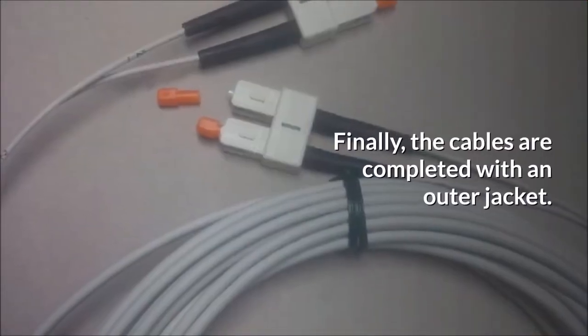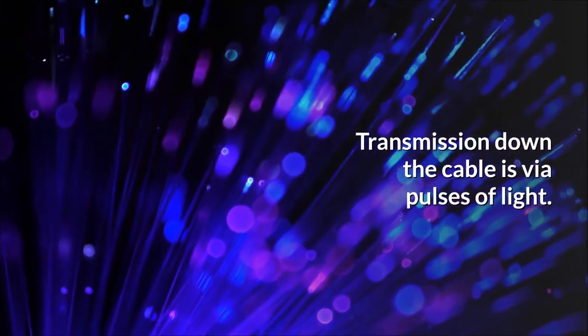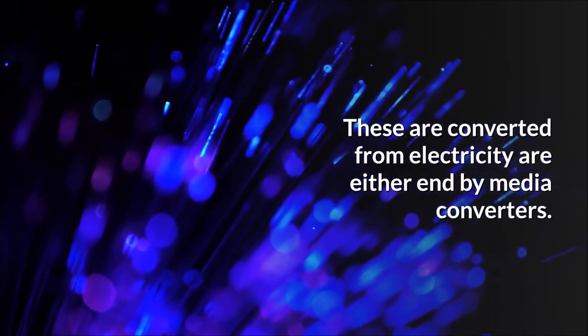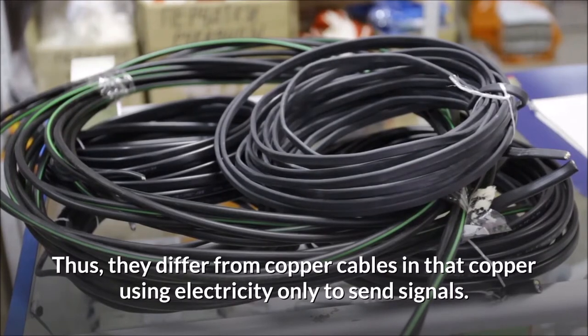Finally, the cables are completed with an outer jacket. Transmission down the cable is via pulses of light. These are converted from electricity at either end by media converters. Thus, they differ from copper cables in that copper uses electricity only to send signals.